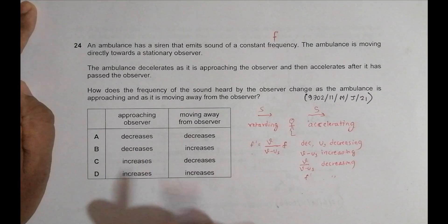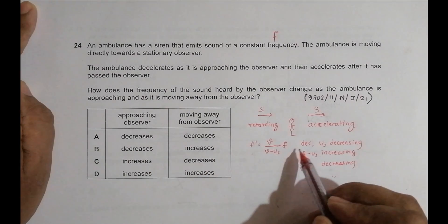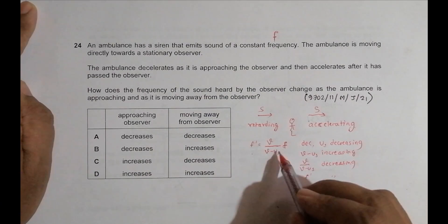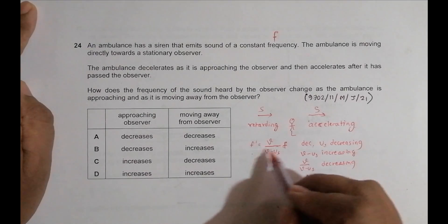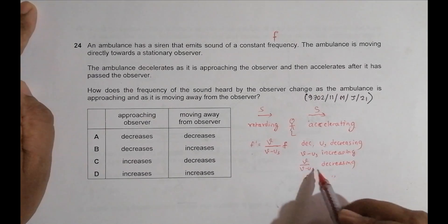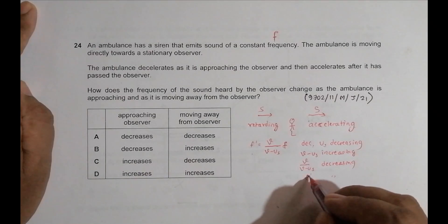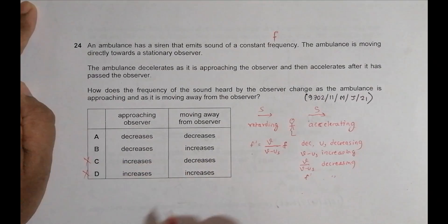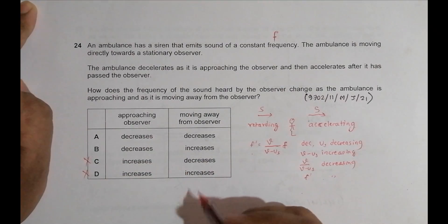So in the initial case, it is decelerating. So U S should be decreasing. If U S decreases, this whole term should increase. If this increases, then this should decrease. So that's why F prime decreases. So if we go to choices, so choice number C and D will be incorrect. Only A and B remains.